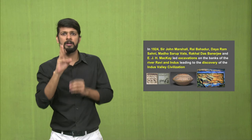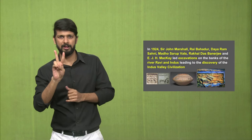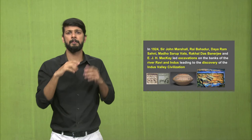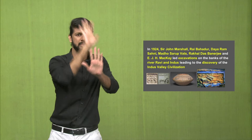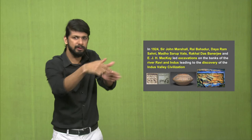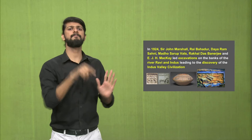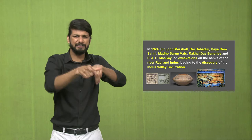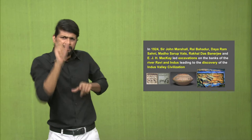After the discoveries near the Ken river, in 1924, Sir John Marshall, Rai Bahadur Daya Ram Sahani, Madho Saroop Watts, Rakhal Das Banerjee, and E.J.H. Mackay led a team to excavate on the banks of the river Ravi and river Indus, which led to the discovery of a huge civilisation called the Indus Valley Civilisation.